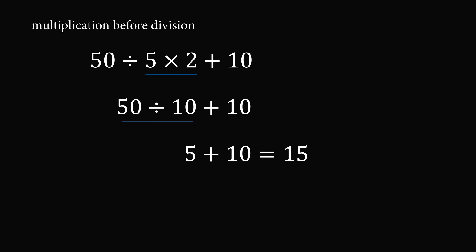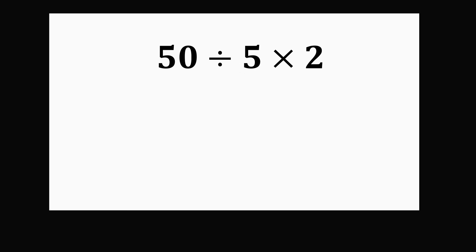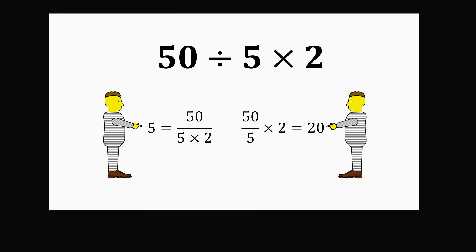So there were many people who said that 15 is the correct answer. And I would agree that if you do multiplication before division, this would evaluate to 15. So what are we supposed to do? Do we have an expression 50 divided by 5 times 2, where some people say that the answer is equal to 5, and other people say that the answer is equal to 20?